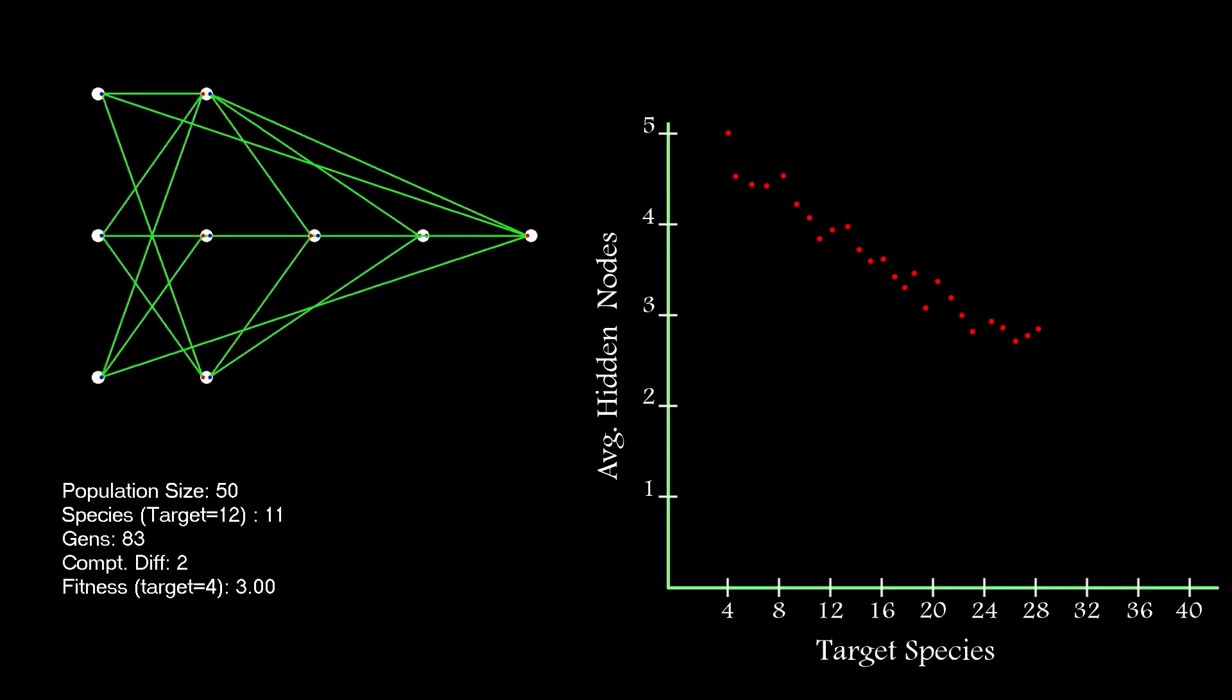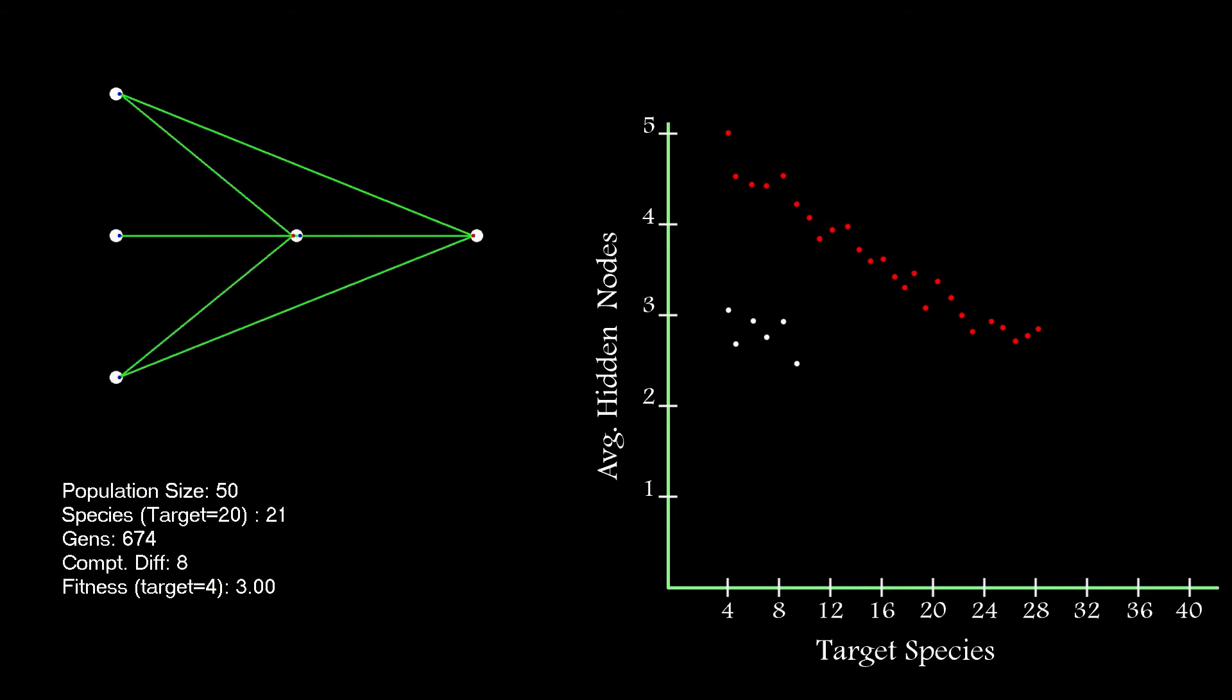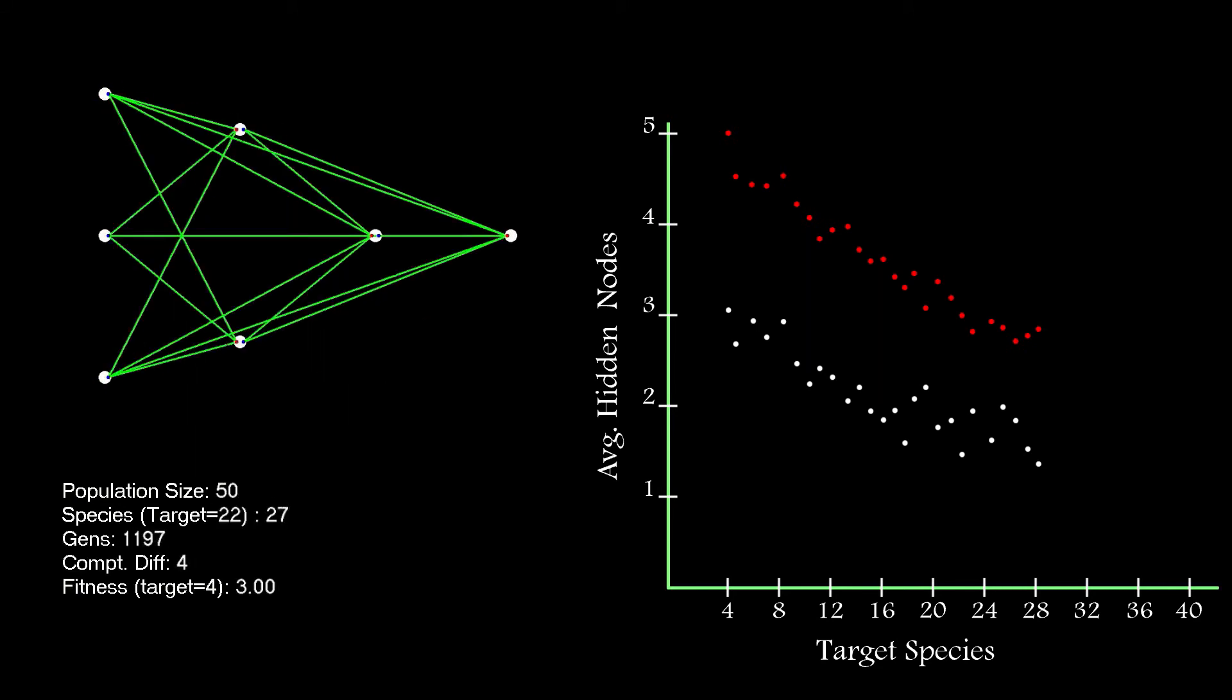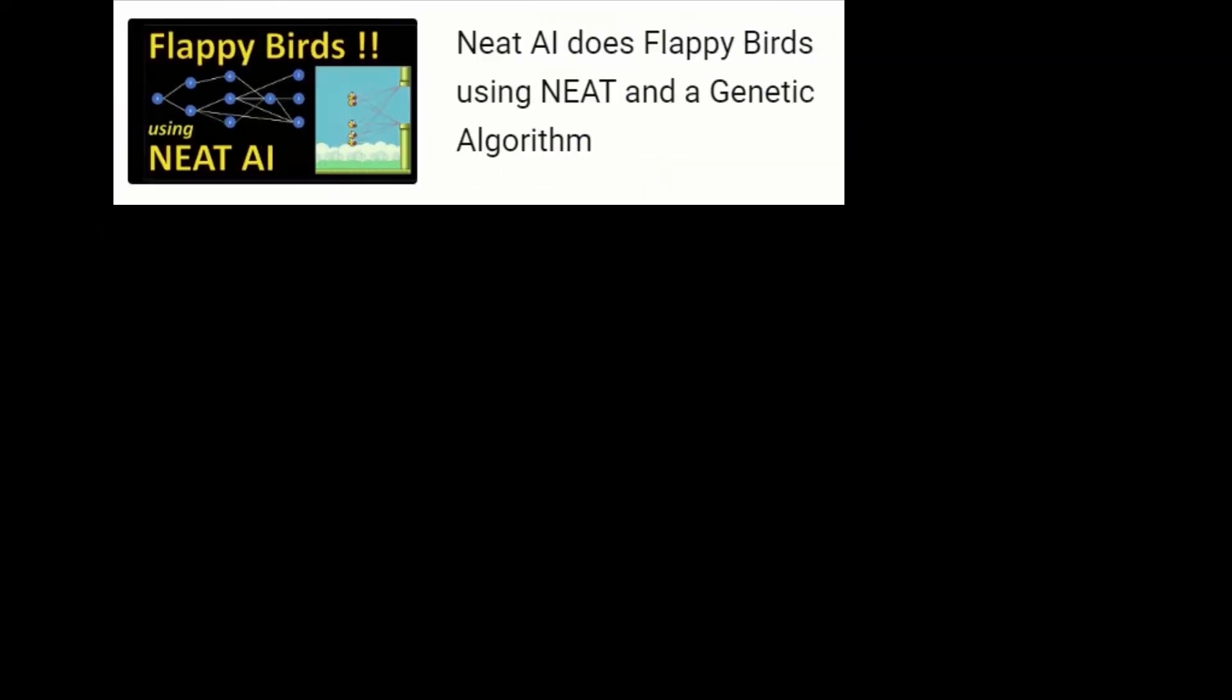This had a drastic improvement on the number of hidden nodes in the exclusive OR solution. I re-ran the test I'd done earlier to see how much improvement there was, and as you can see, there was a nice drop in solution complexity and moved it into the same range as Ken Stanley's original NEAT implementation.